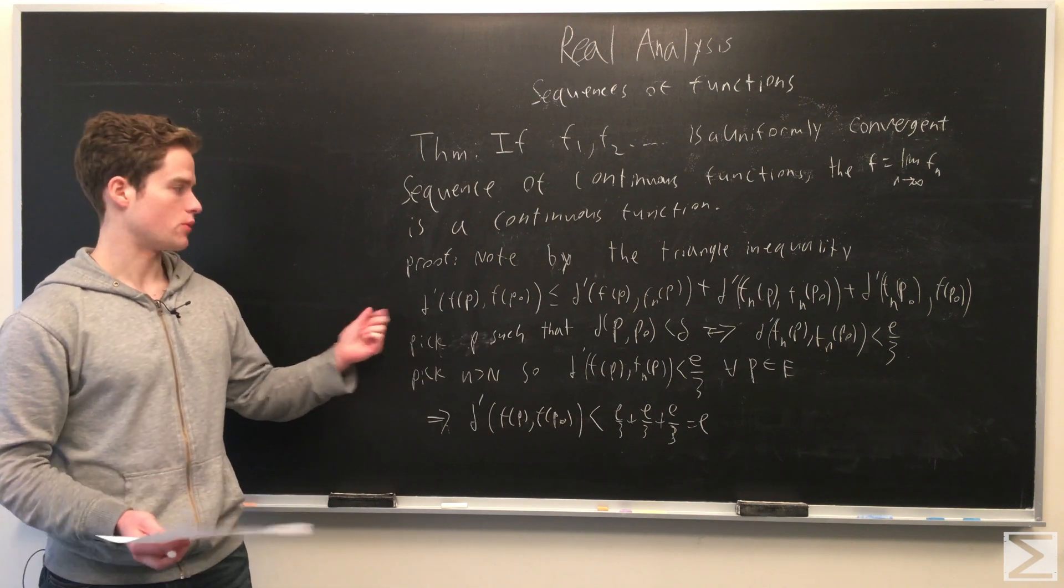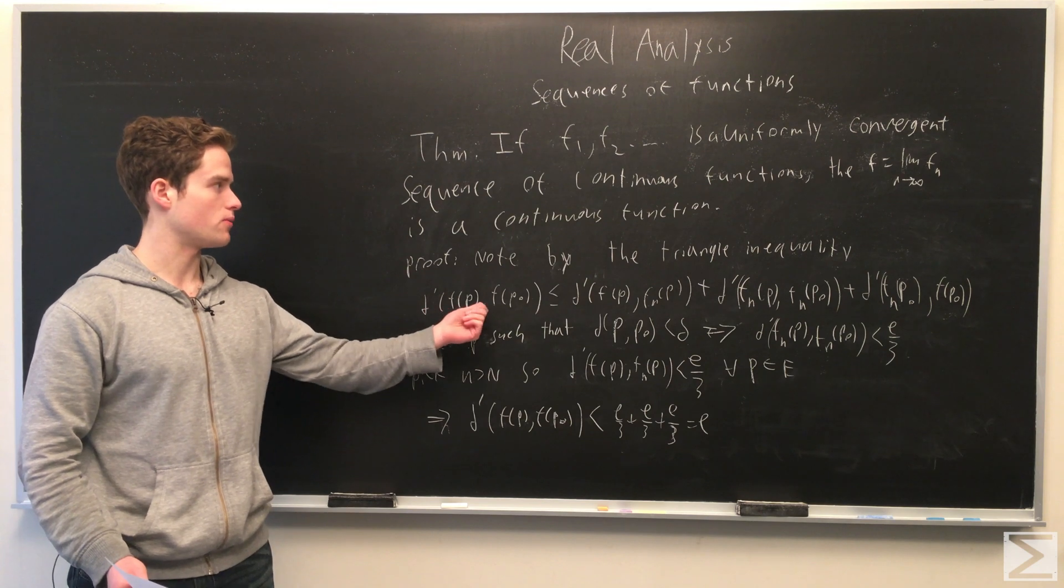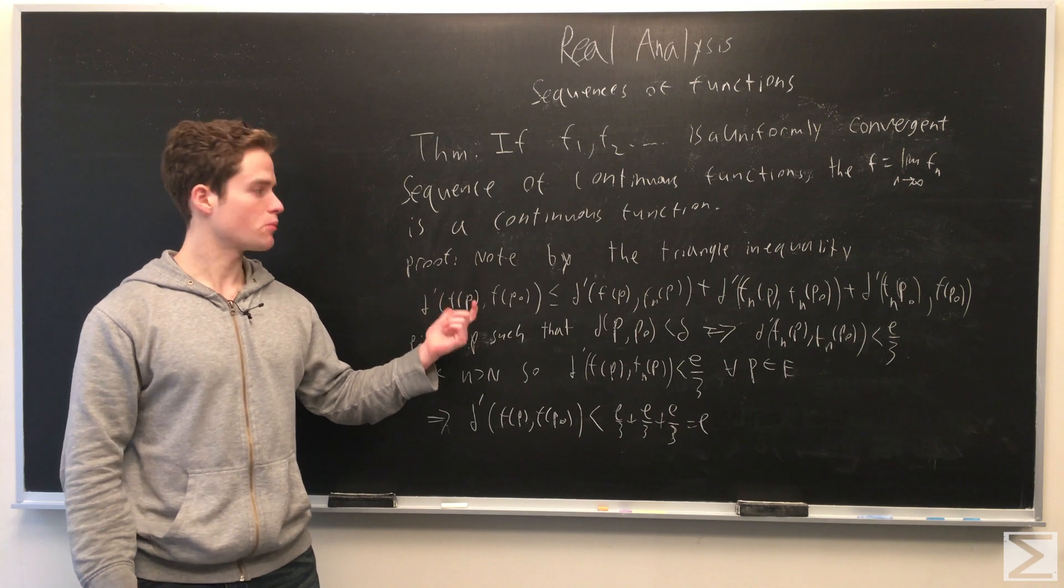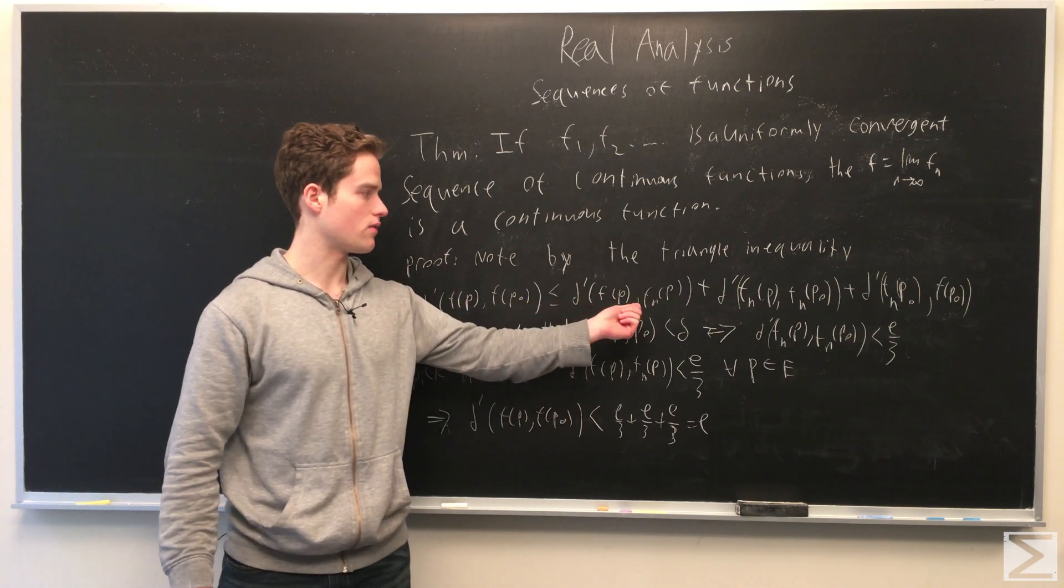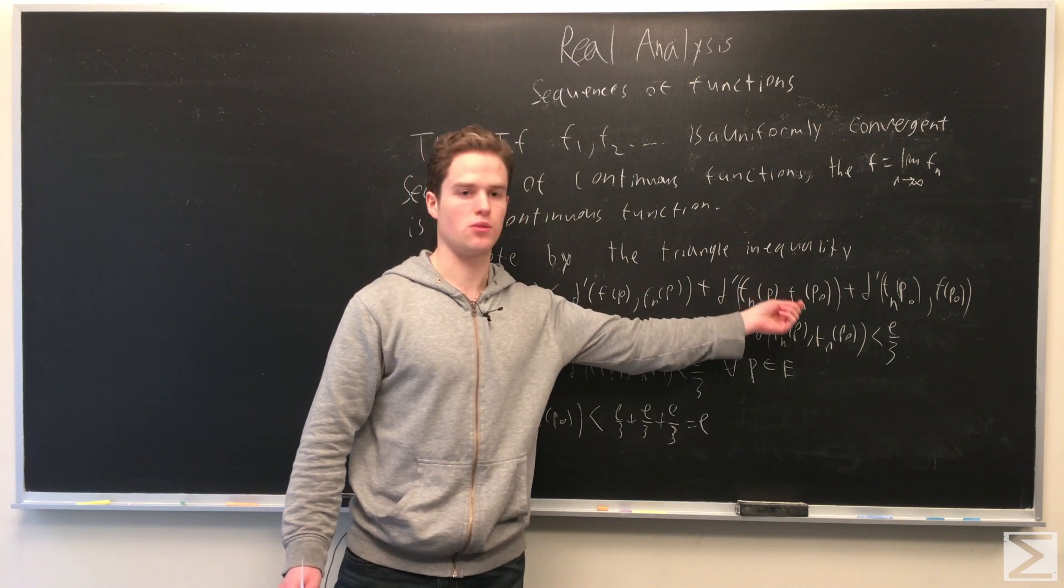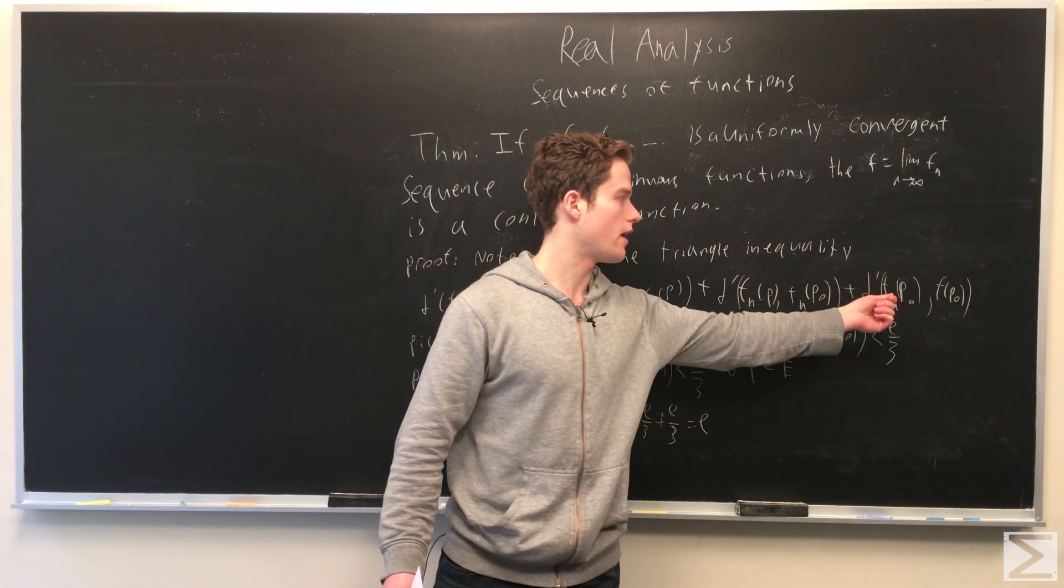This is proved by taking the distance between f(p) and f(p_0) in E' and using the triangle inequality to break this up into three parts: the distance between f(p) and f_n(p), plus f_n(p) and f_n(p_0), and then f_n(p_0) and f(p_0).